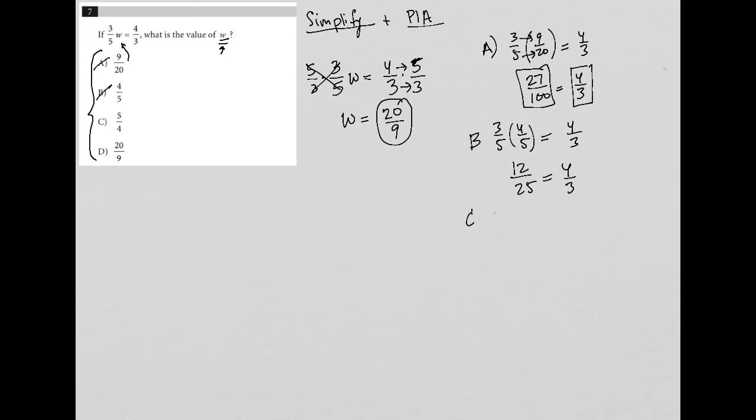Choice C, replace with five-fourths or plug in five-fourths. In this case, I'd have three-fifths times five-fourths equals four-thirds. Three-fifths times five-fourths is 15 over 20. And once again, same deal—15 over 20 can actually reduce into three-fourths. Five goes into 15 three times, five goes into 20 four times. So those are not equal to each other. So C is gone.